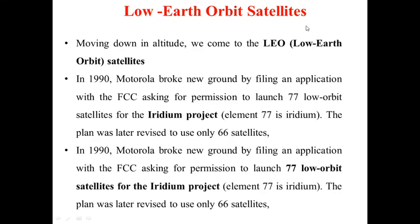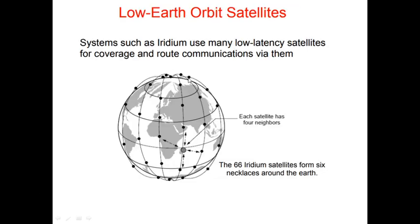The next category is low Earth orbit satellites. In 1990, Motorola broke new ground by filing an application with the FCC asking for permission to launch 77 low orbit satellites for the Iridium project. This plan was later revised to use 66 satellites. The Iridium project was implemented with 66 satellites forming six necklaces around the Earth.